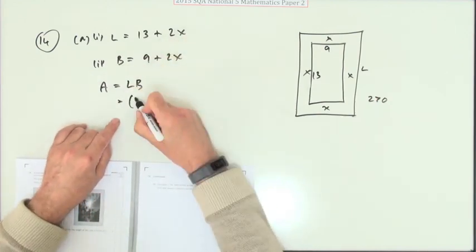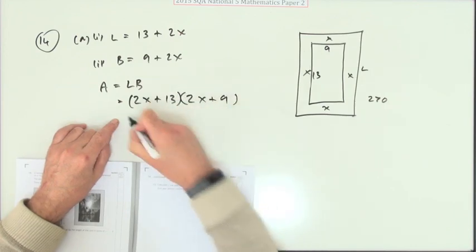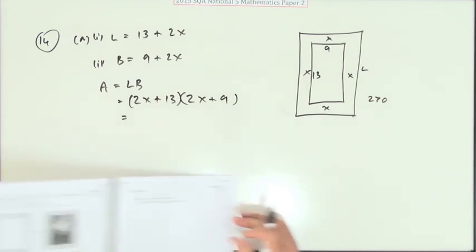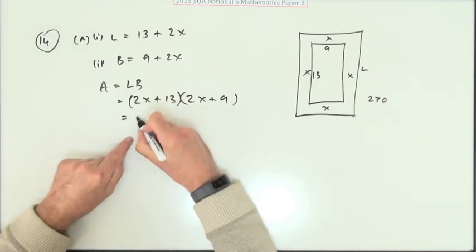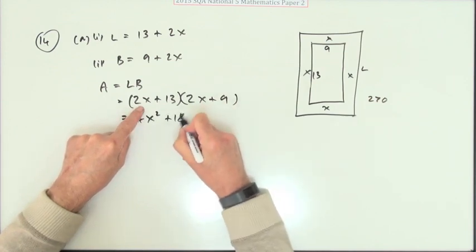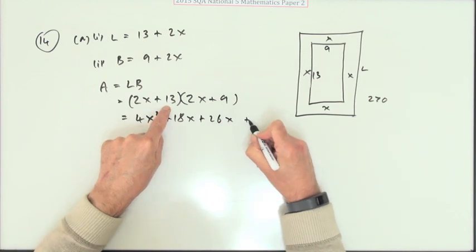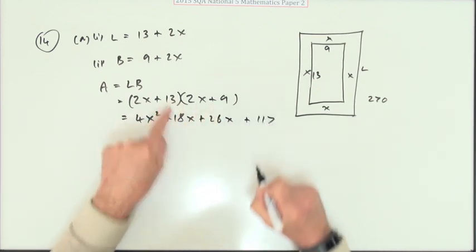I think I'll put them the other way around though. So the length is 2X plus 13. The breadth is 2X plus 9. So now you multiply it out. And that will be 4X squared plus 18X plus 26X plus, and that's going to be 90, 117.